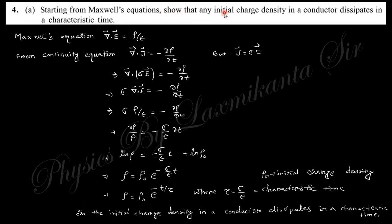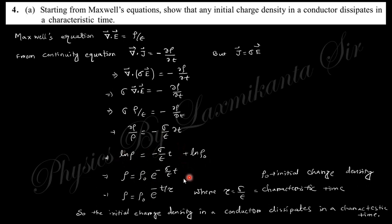Next question: starting from Maxwell's equations, show that any initial charge density in a conductor is dissipated in a characteristic time. From Maxwell's equation, divergence of E = ρ/ε. From the continuity equation, divergence of J = −∂ρ/∂t. Using J = σE and substituting divergence of E = ρ/ε, you get ∂ρ/∂t = −(σ/ε)ρ. Integrating gives ρ = ρ₀ e^(−σt/ε), showing exponential decay.